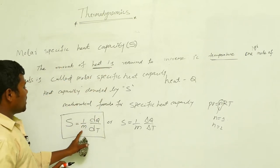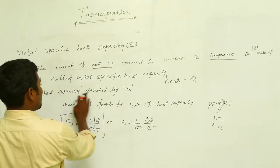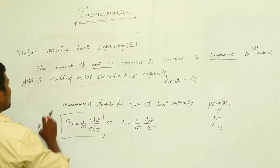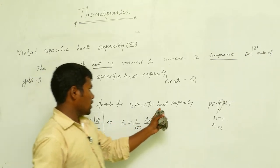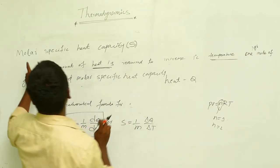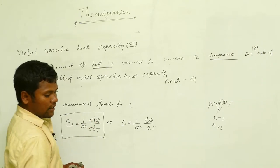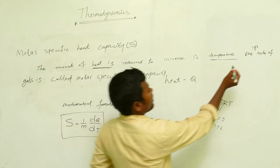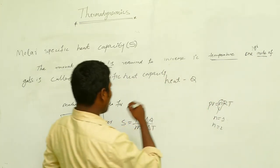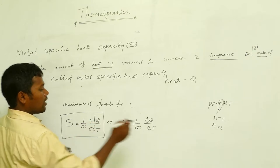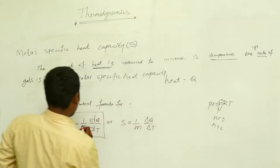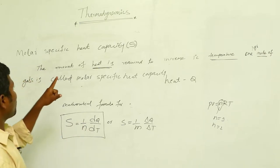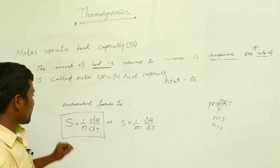Molar specific heat capacity is also denoted by S. The difference from specific heat capacity is that instead of mass m, we use n for moles. So the formula for molar specific heat capacity is: S = (1/n) dQ/dT.